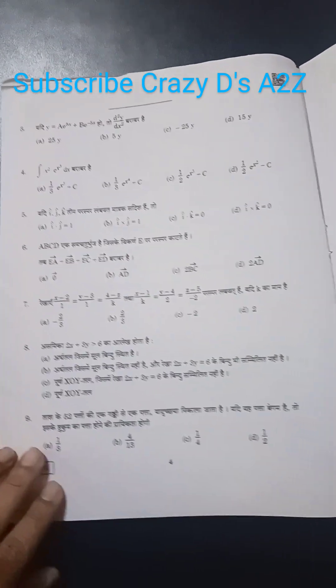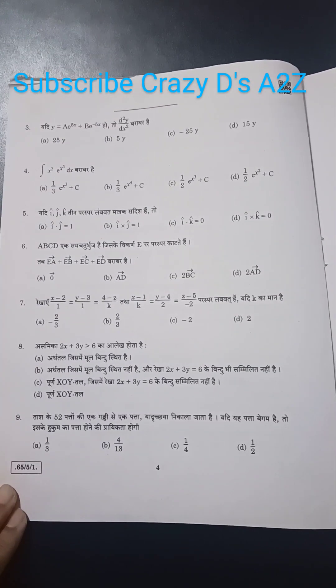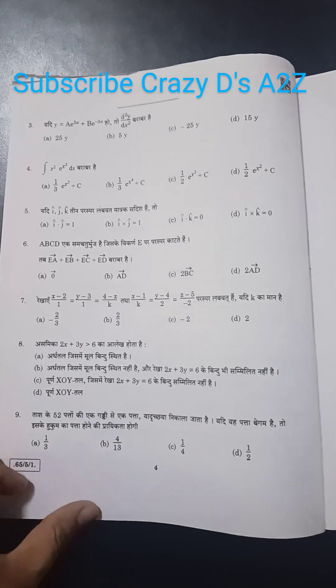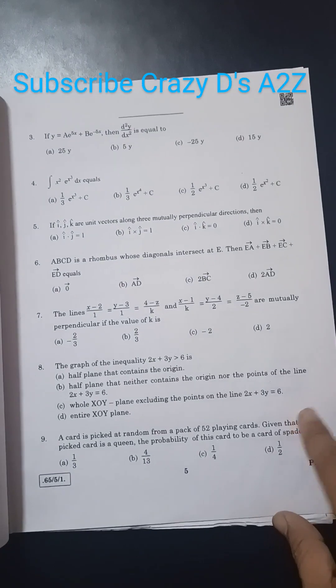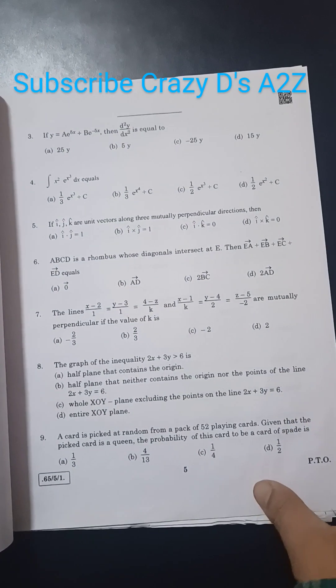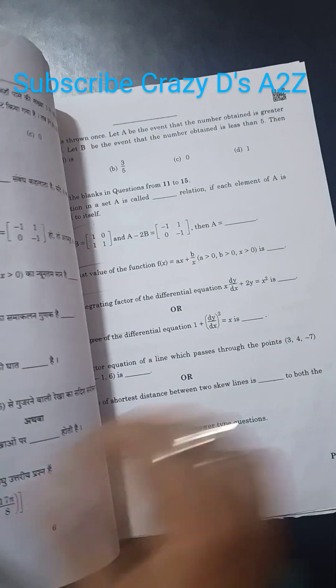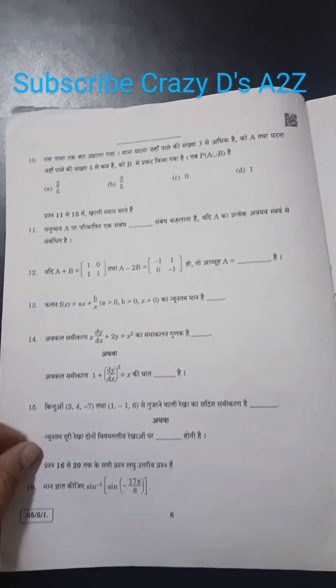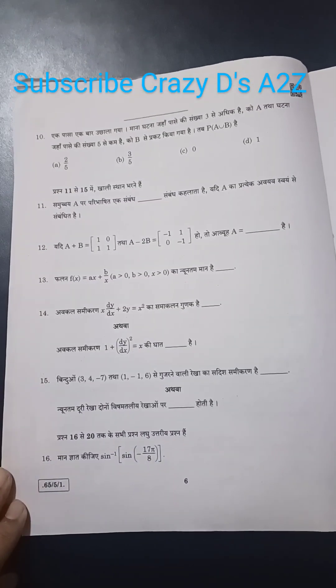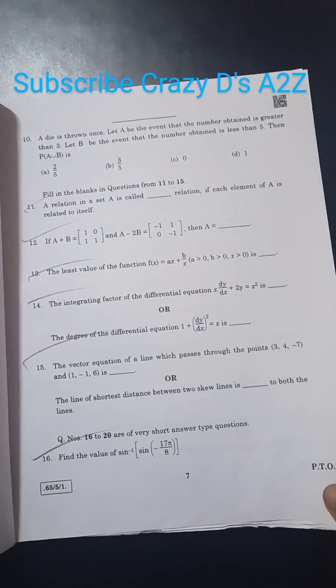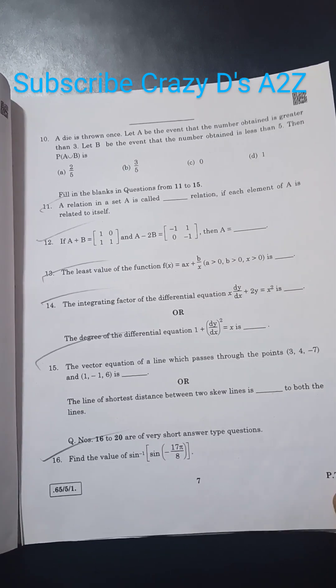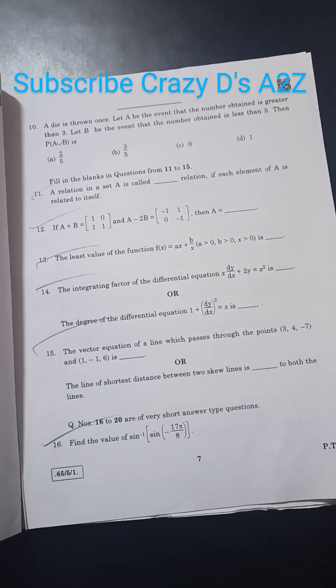This is the Hindi part of the question paper, question three to question nine. And this is the English part for question three to nine. Here are questions 10 to 16. The same, this is for the English part 10 to 16 having all the questions.